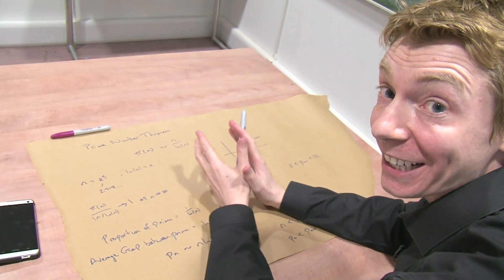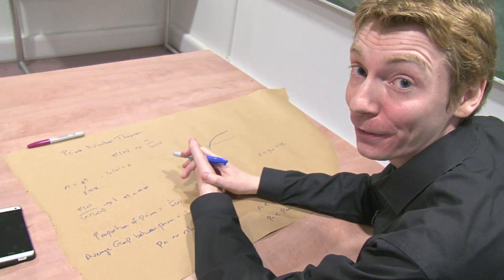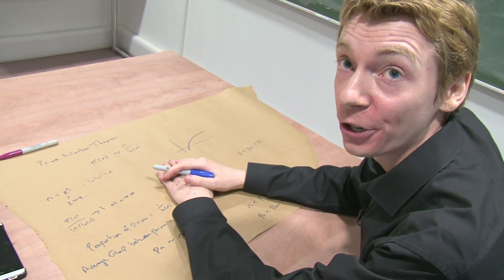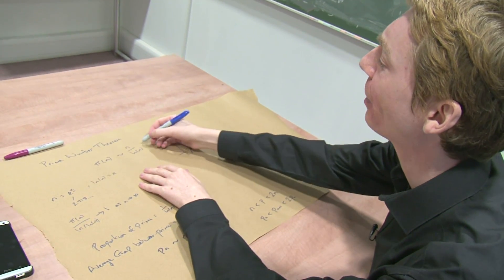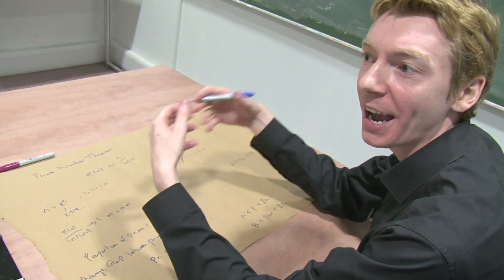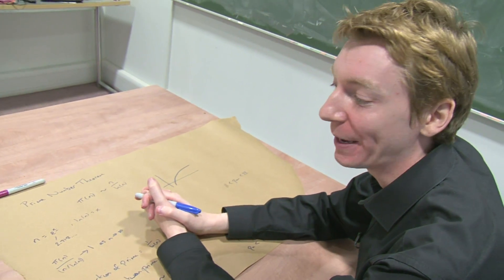This prime number formula is actually the easy version of the prime number formula. There's more sophisticated versions of this. They look the same, but they've added on extra terms, and it gives you a better result. So there are better versions of it.